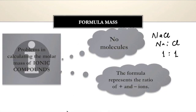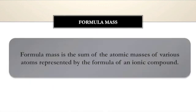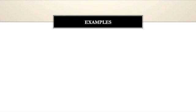Formula mass is defined as the sum of the atomic masses of various atoms represented by the formula of an ionic compound. Let's take some examples to see how we can calculate formula masses — it's almost the same as molecular mass, just that we are calculating it for ionic compounds.